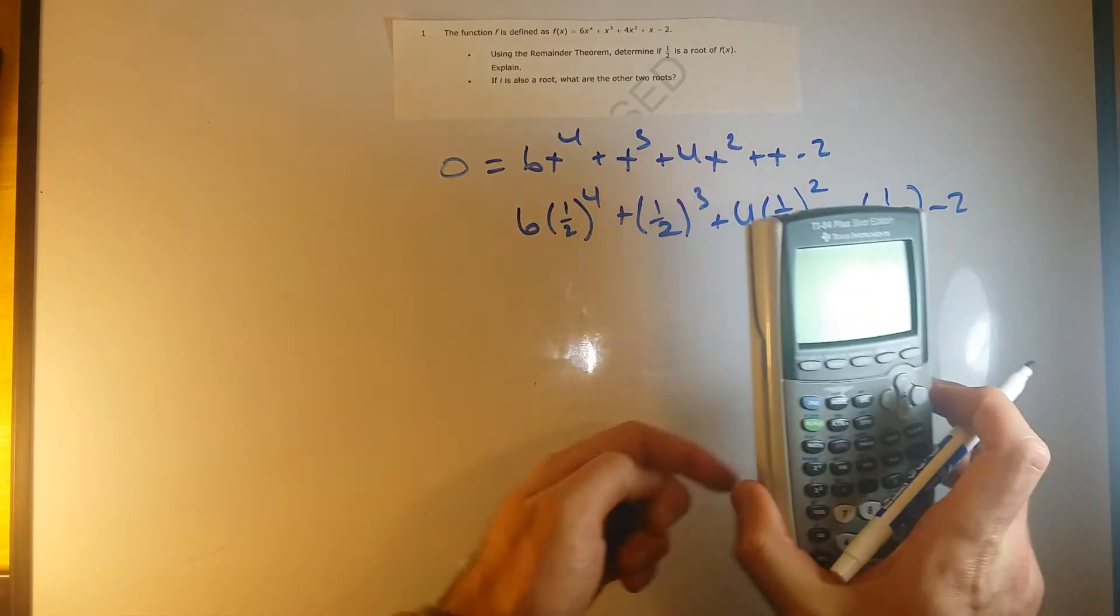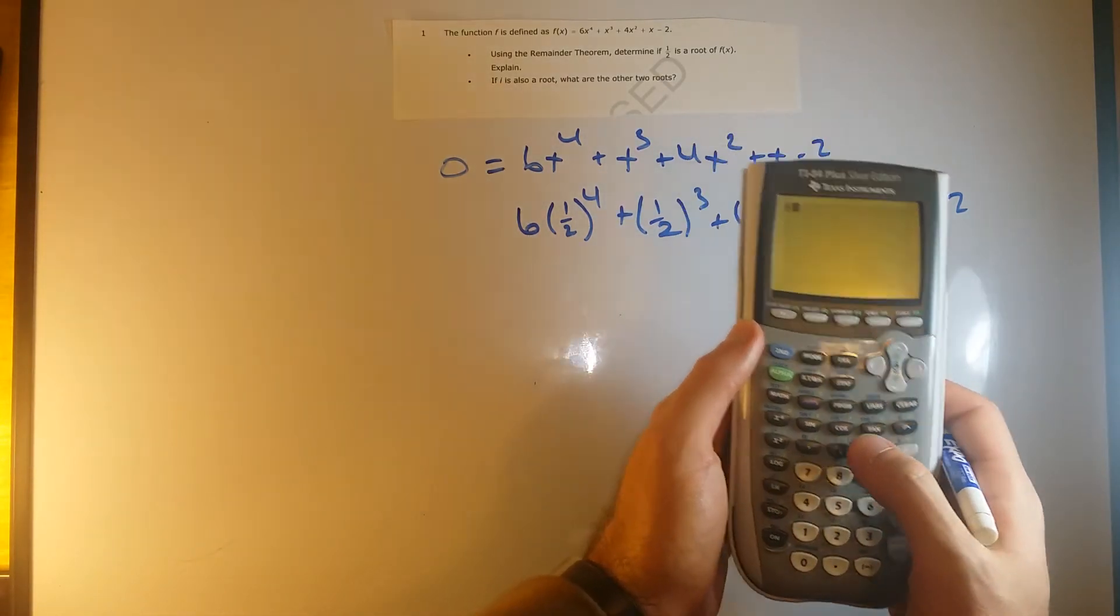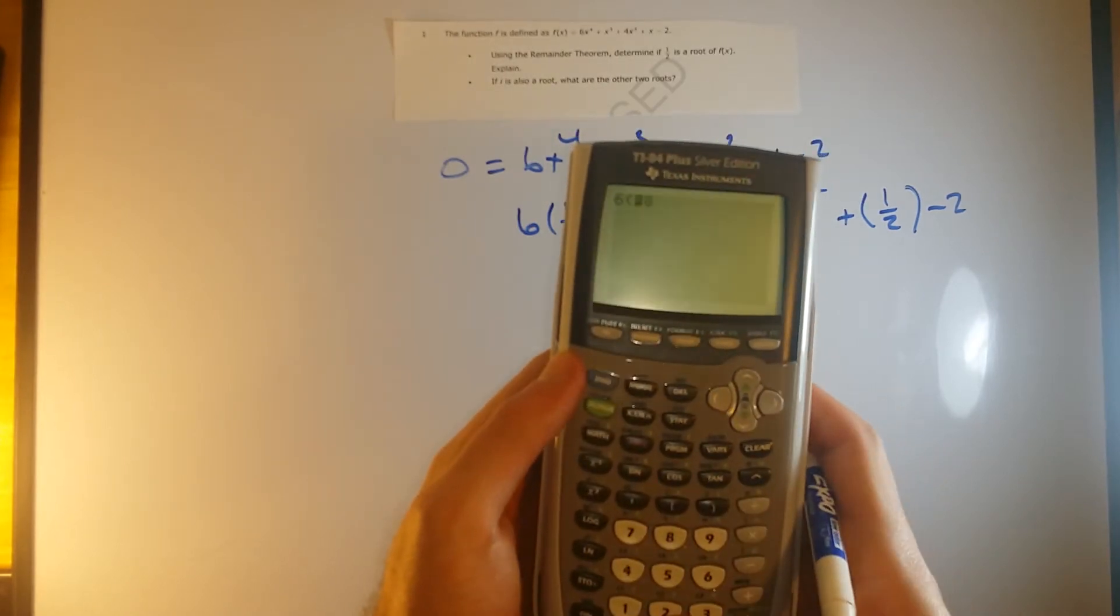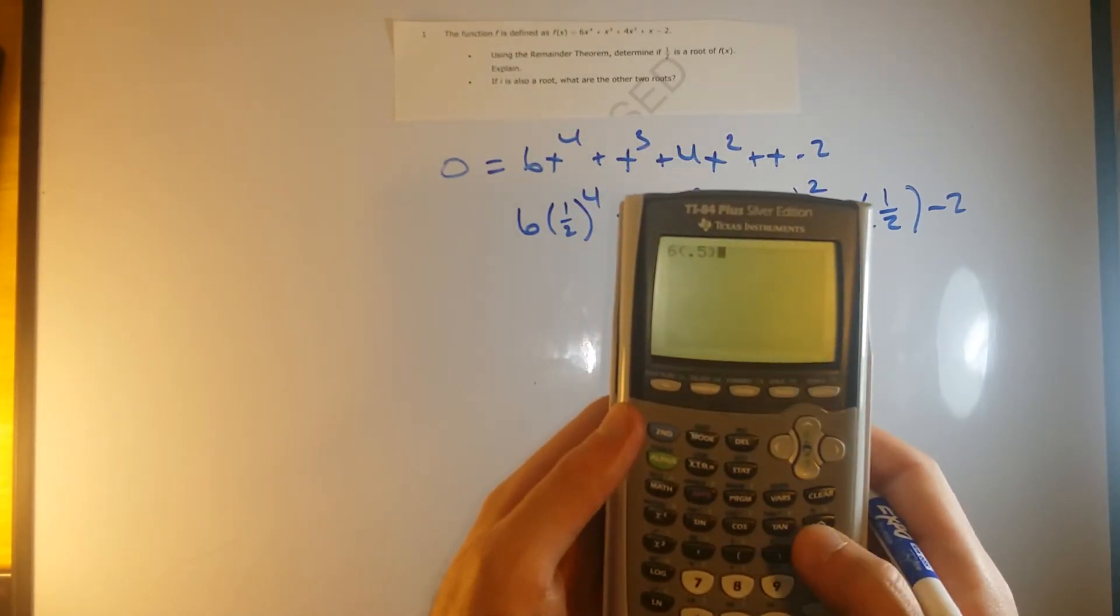And instead of plugging in 1 half, I'm just going to plug in 0.5. It means the same thing, just easier for me to type.